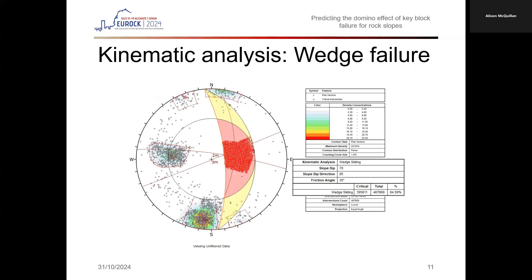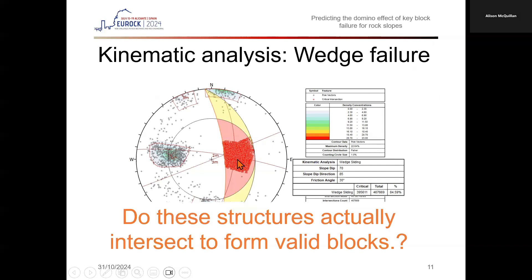Take this example of a wedge analysis. Are all of these highlighted intersections in the wedge sliding zone realistic? Or, rephrasing, do all the mapped structures actually intersect to form valid blocks? The answer is we don't know unless we analyze and filter the defect data by mapping domain and persistence.